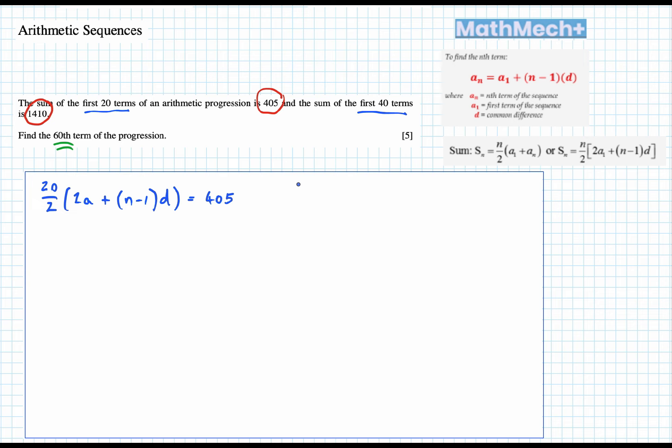Let's look at our second equation. We had the first 40 terms, so 40 over 2 times 2a plus n minus 1d. We don't have any details yet. And our total for the sum was 1410. That's our setup. Now we need to simplify these down.